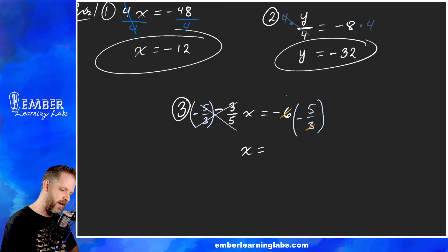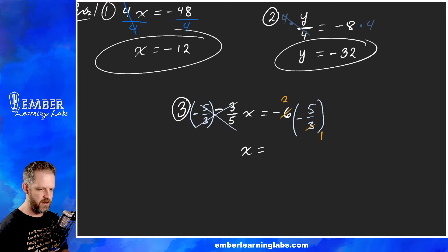So these cancel, leaving us with just an x over here. Bring down our equals, keep it nice and neat and tidy. Now over here we can do some pre-reducing because three and six are both divisible by three. Six divided by three is two, three divided by three is one. Negative times negative is a positive. So then we've got negative two times negative five is positive 10.